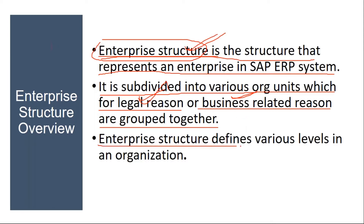Enterprise structure defines various levels in an organization. You get the entire organization — all the levels — how many manufacturing units it has, how many distribution centers, where they are located, how many go-downs, where they are located, including their addresses. Everything you will get with this enterprise structure, this organization structure.